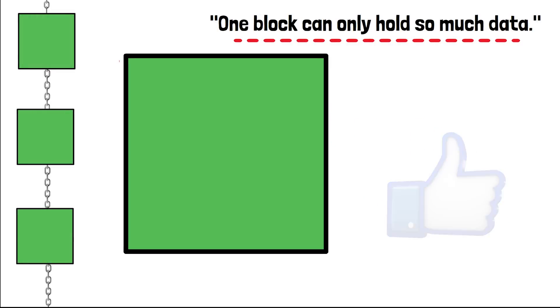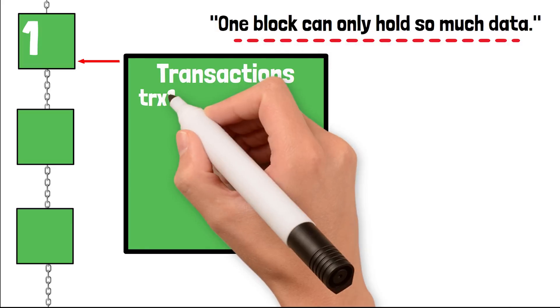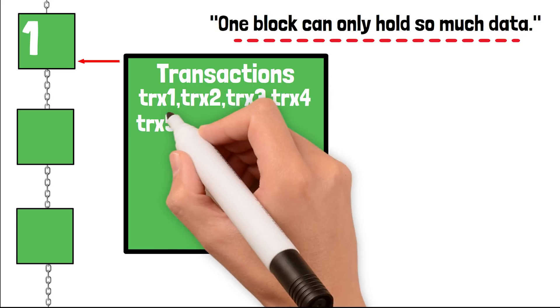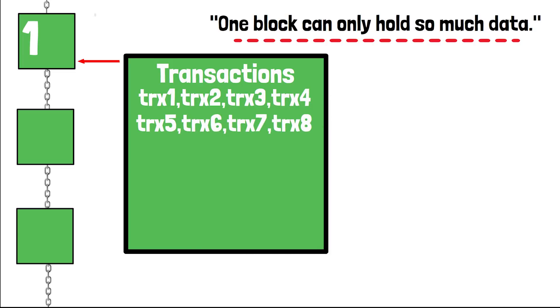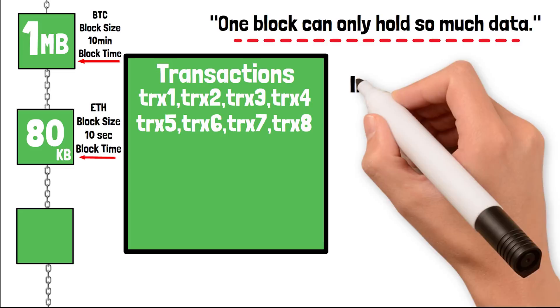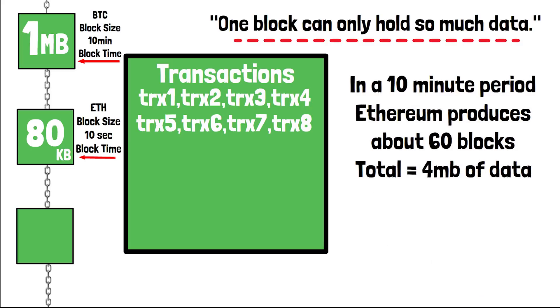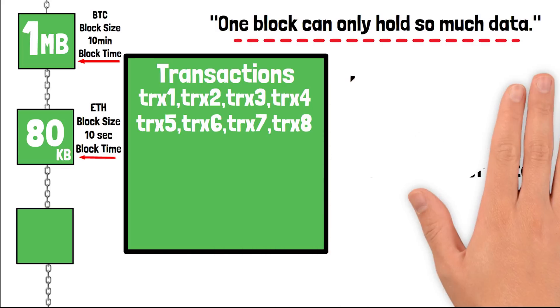Imagine that a block represents one block on the blockchain. Inside each block is a list of transactions. Every blockchain is different but they all function the same way — each block is limited by size, and each transaction takes up space. On the Bitcoin blockchain, one block is mined every 10 minutes and each block is one megabyte in size. On Ethereum, each block is 80 KB but a new block is mined every 10 seconds.